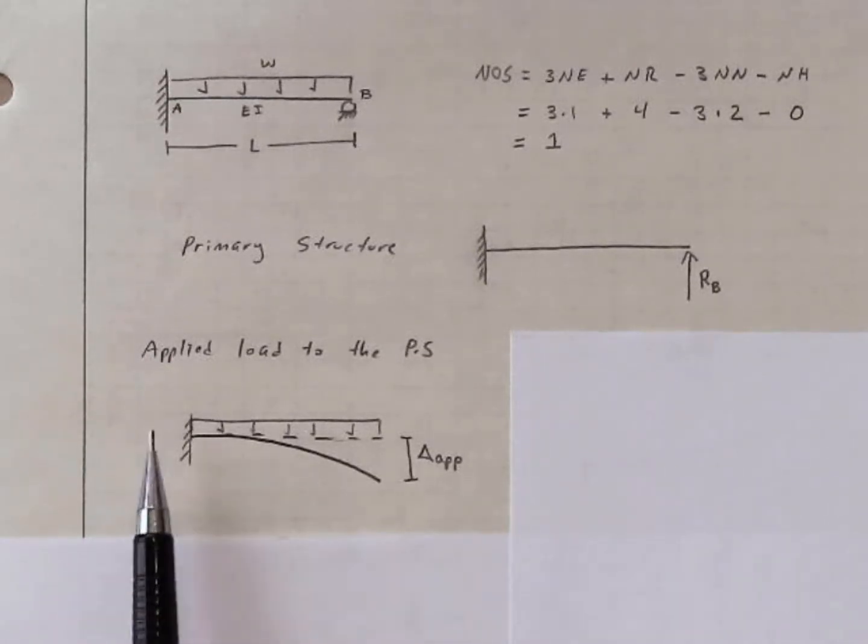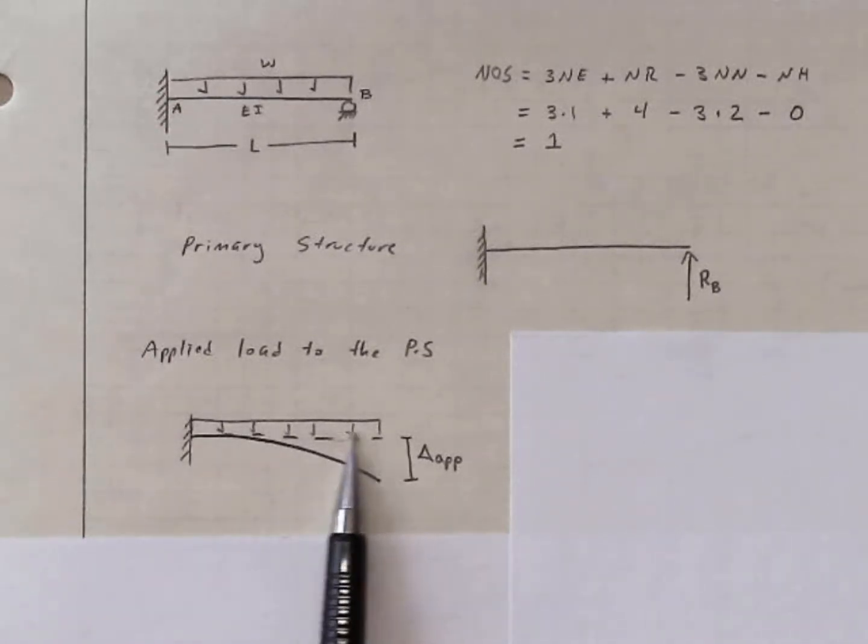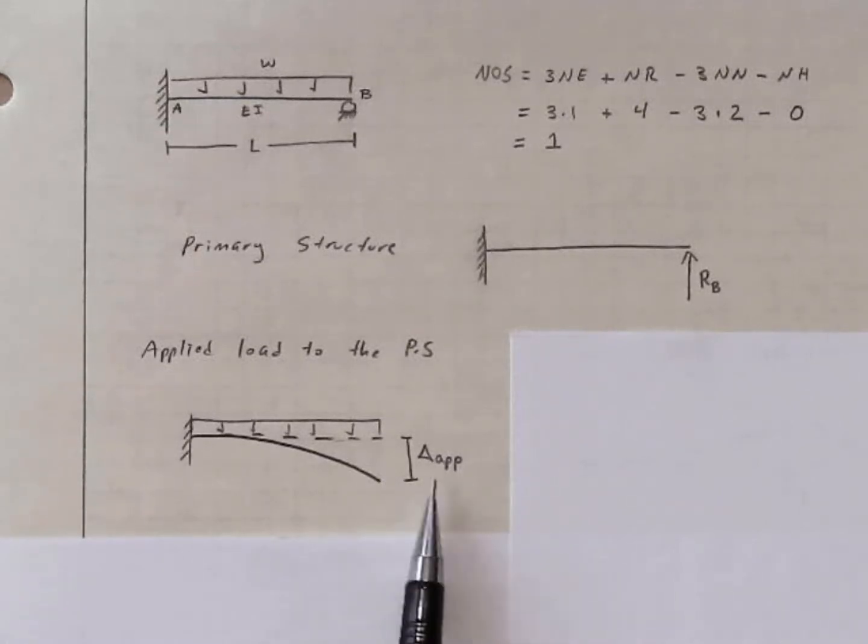Here, I'm showing the fixed end, the undeformed straight shape, the load applied, and then the curved deformed shape. And there's a value of deflection at the end, which I'm calling delta sub APP for the applied load.